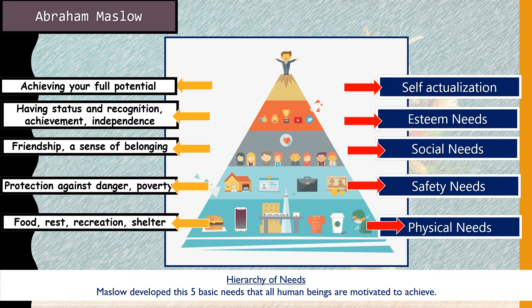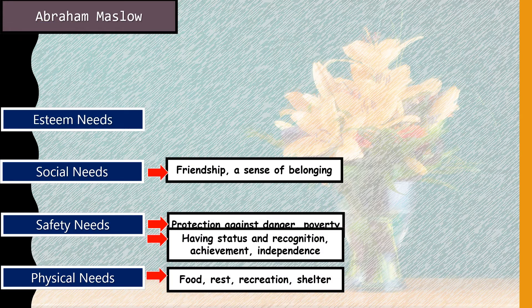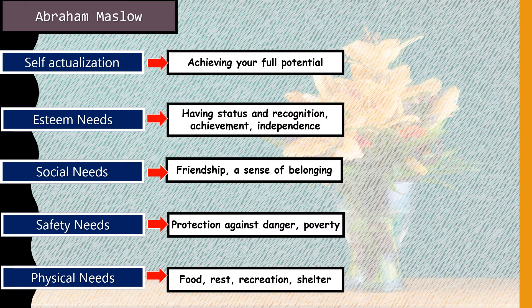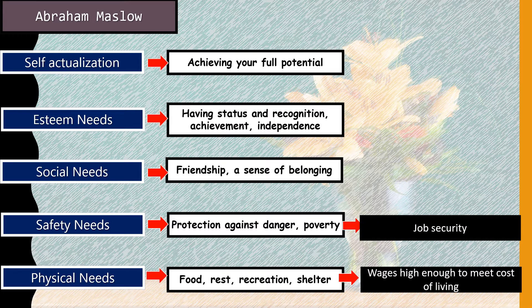In the next slide, we look at practical examples of how Maslow's needs can be applied in an organization. For physical needs, organizations can look at wages or salaries paid appropriately according to the current standard of living — meeting the minimum wage set by the country so employees can afford to eat and pay rent.